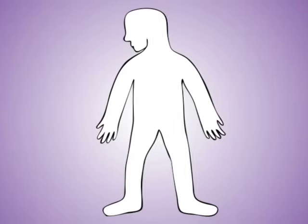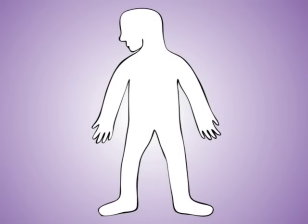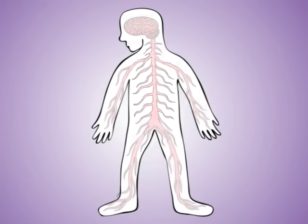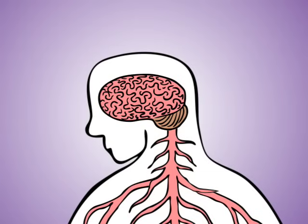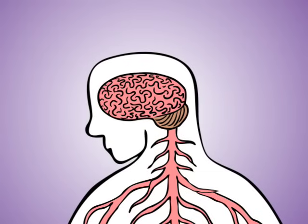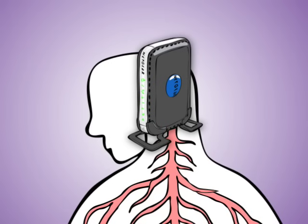Think of a network as something similar to your body's central nervous system. At the top of the network is a brain that handles all the traffic coming through. This is called a router.